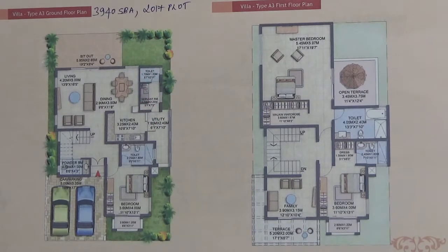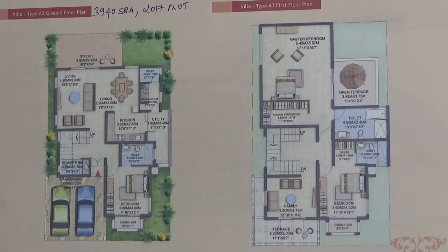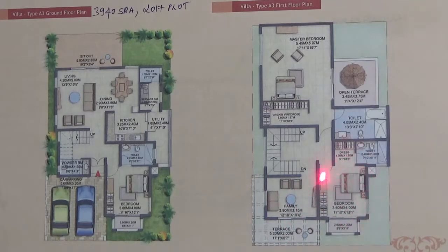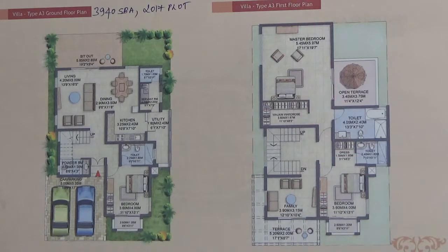As you go to the first floor, you have a family room which has access to the terrace. There is one more guest bedroom here — a second guest bedroom with attached bathroom and toilet. And there is a master bedroom which also has access to the terrace.